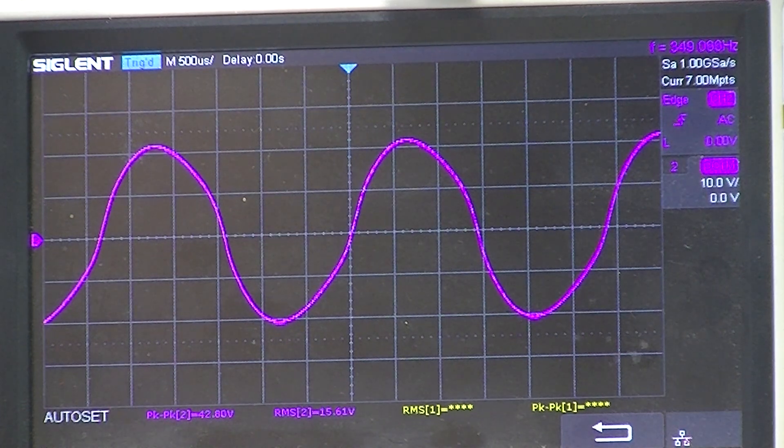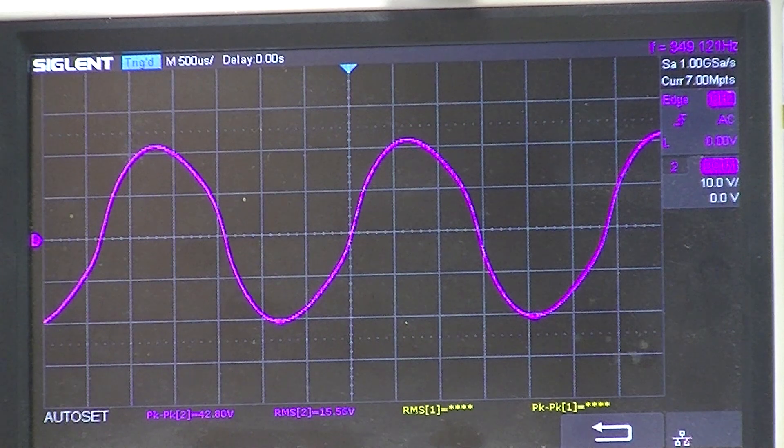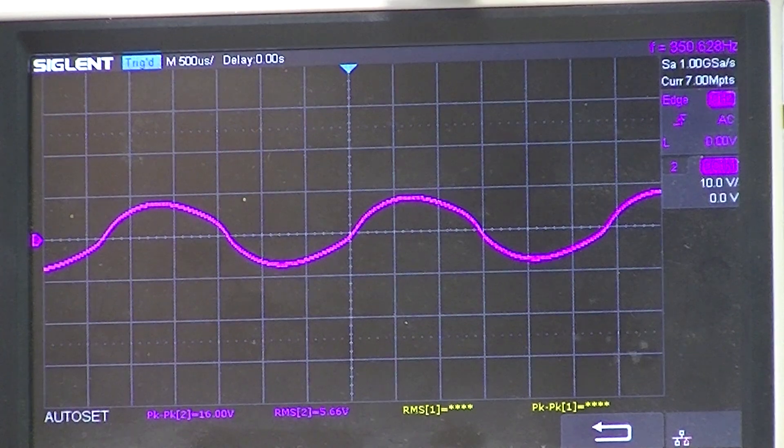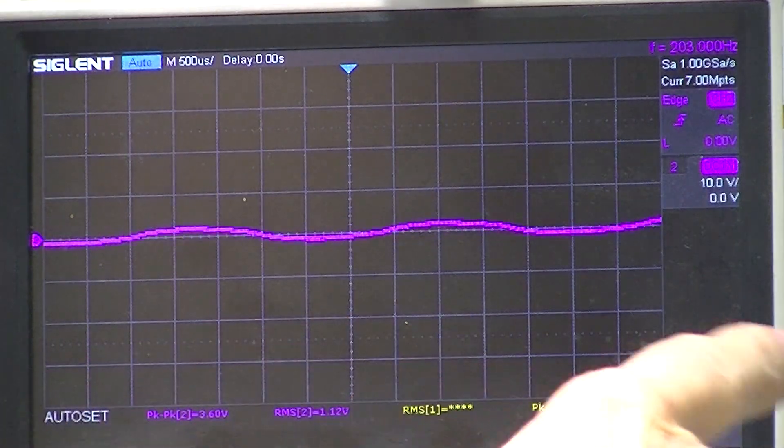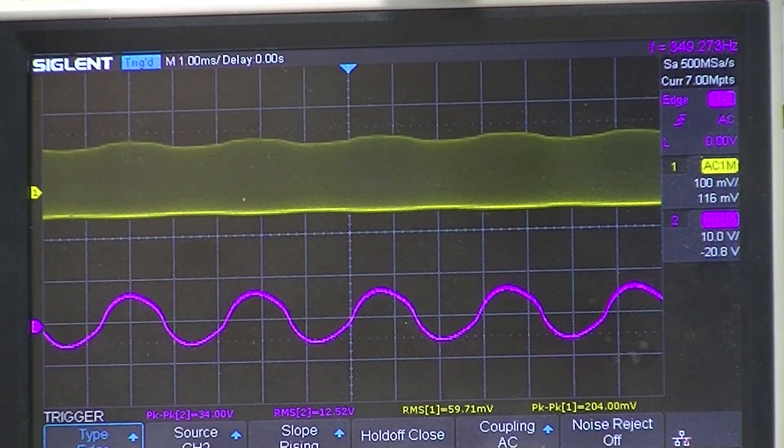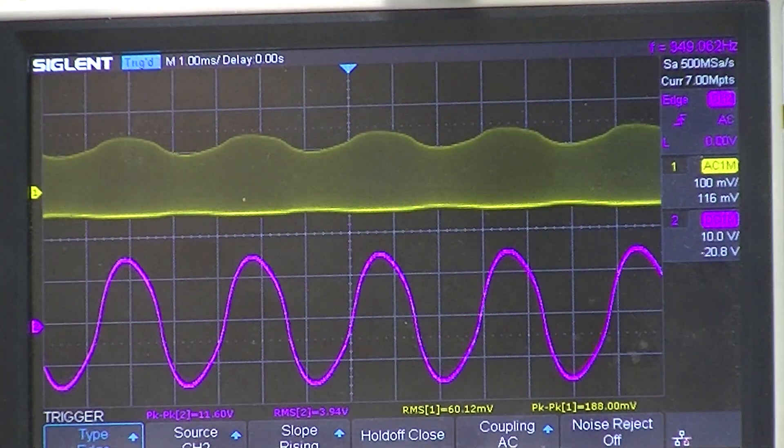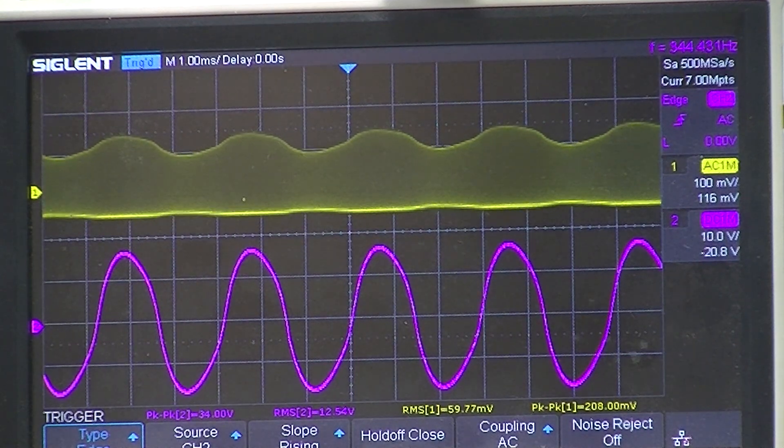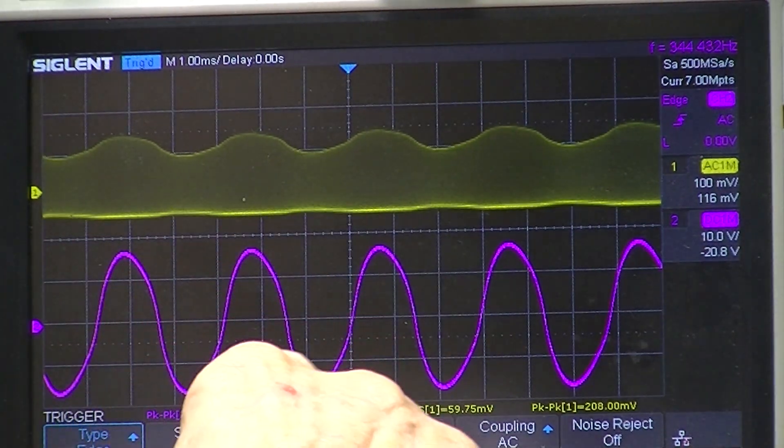Now if I turn on the VFO it should be at two megahertz and amplitude modulated with the 400 cycle signal. So we'll do that.